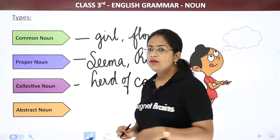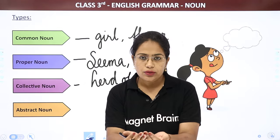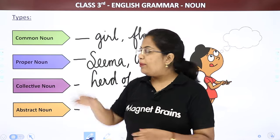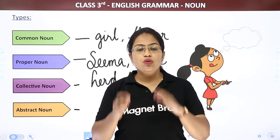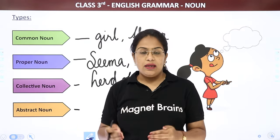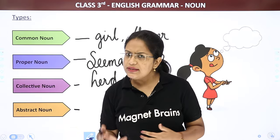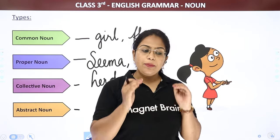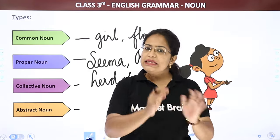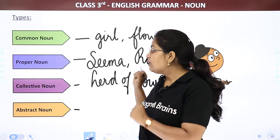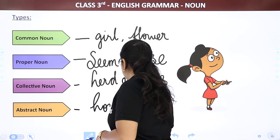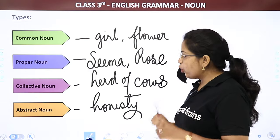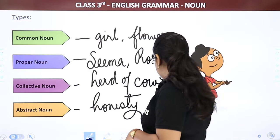Which flower? Rose. You are talking about a specific flower — Rose. Next is collective noun. Collective noun means a group of nouns, a group of people, a group of students. For animals — domestic animals like cows — their group is called a 'herd of cows.' So collective means a group. And abstract noun — the four types are common, proper, collective, and abstract. We will see some examples.